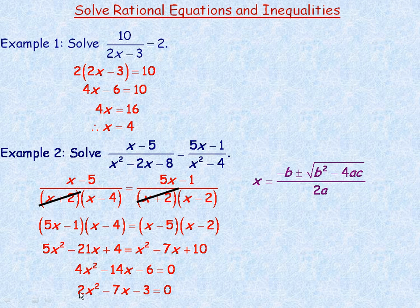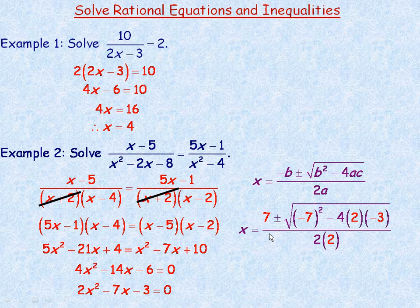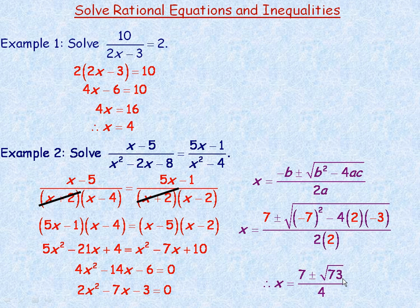With a equals 2, b equals negative 7, and c equals negative 3, substituting into the quadratic formula gives: under the root sign, b squared is 49, and minus 4 times 2 times negative 3 adds 24, so 49 plus 24 is 73. The solutions are x equals 7 plus or minus the square root of 73, all over 4.